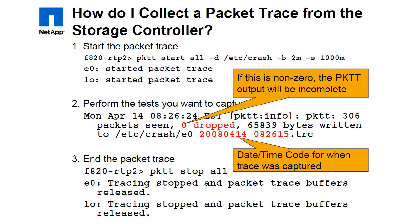Run pktt start all -t /etc/crash. Here the 'start' subcommand is used to start tracing. The 'all' option collects information from all interfaces. The -t option specifies the path to an existing directory in which the trace file will be written.